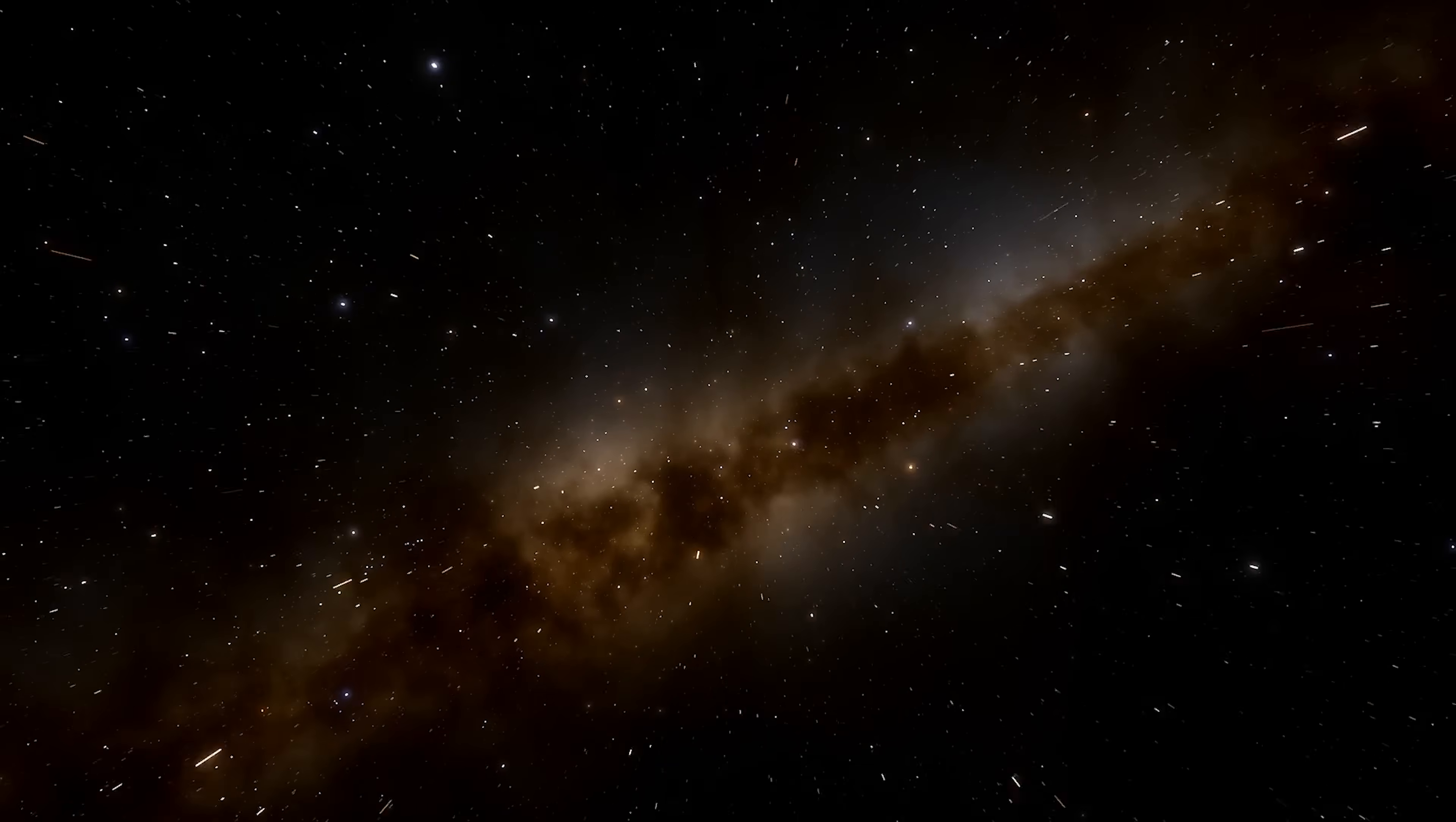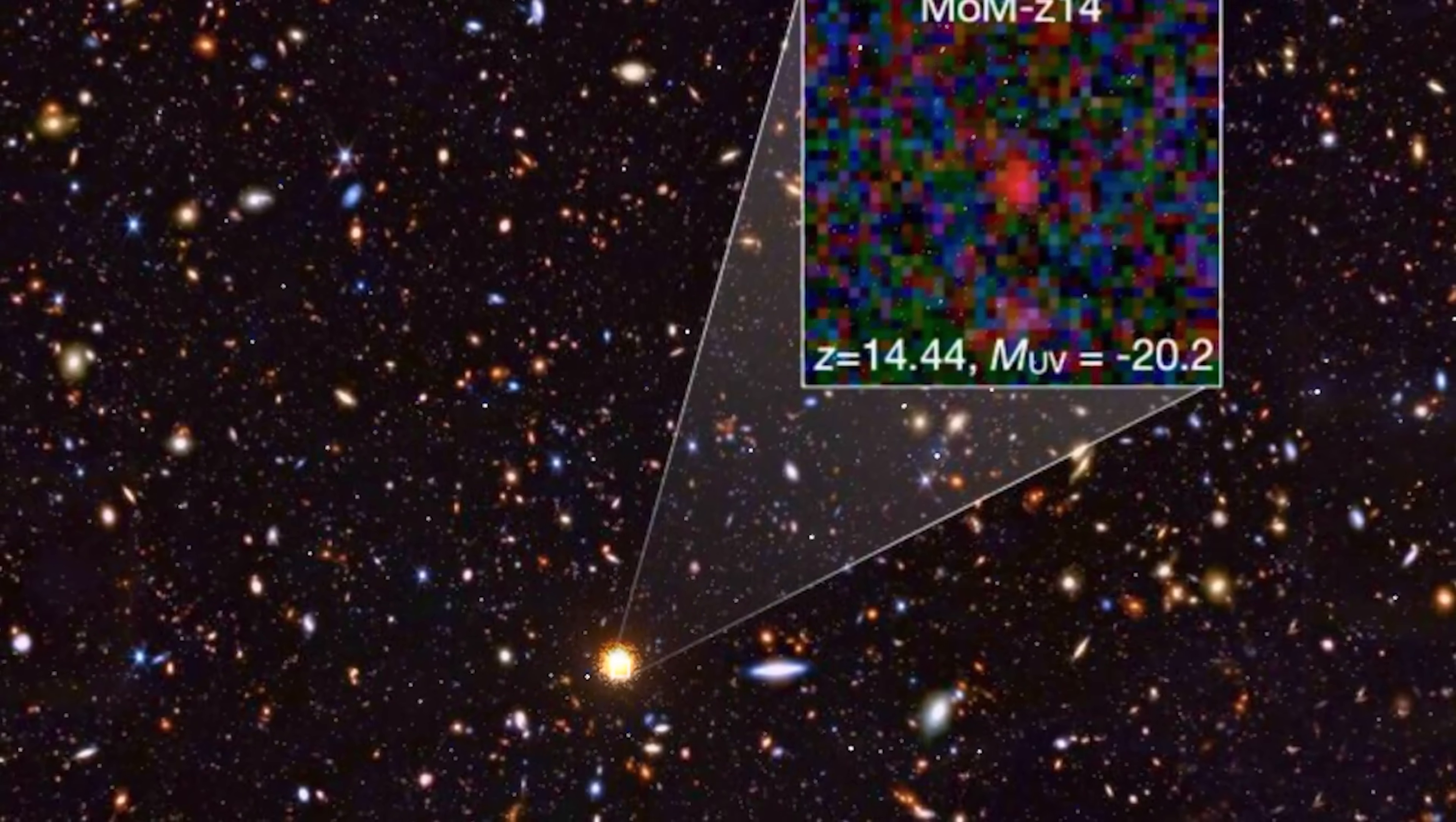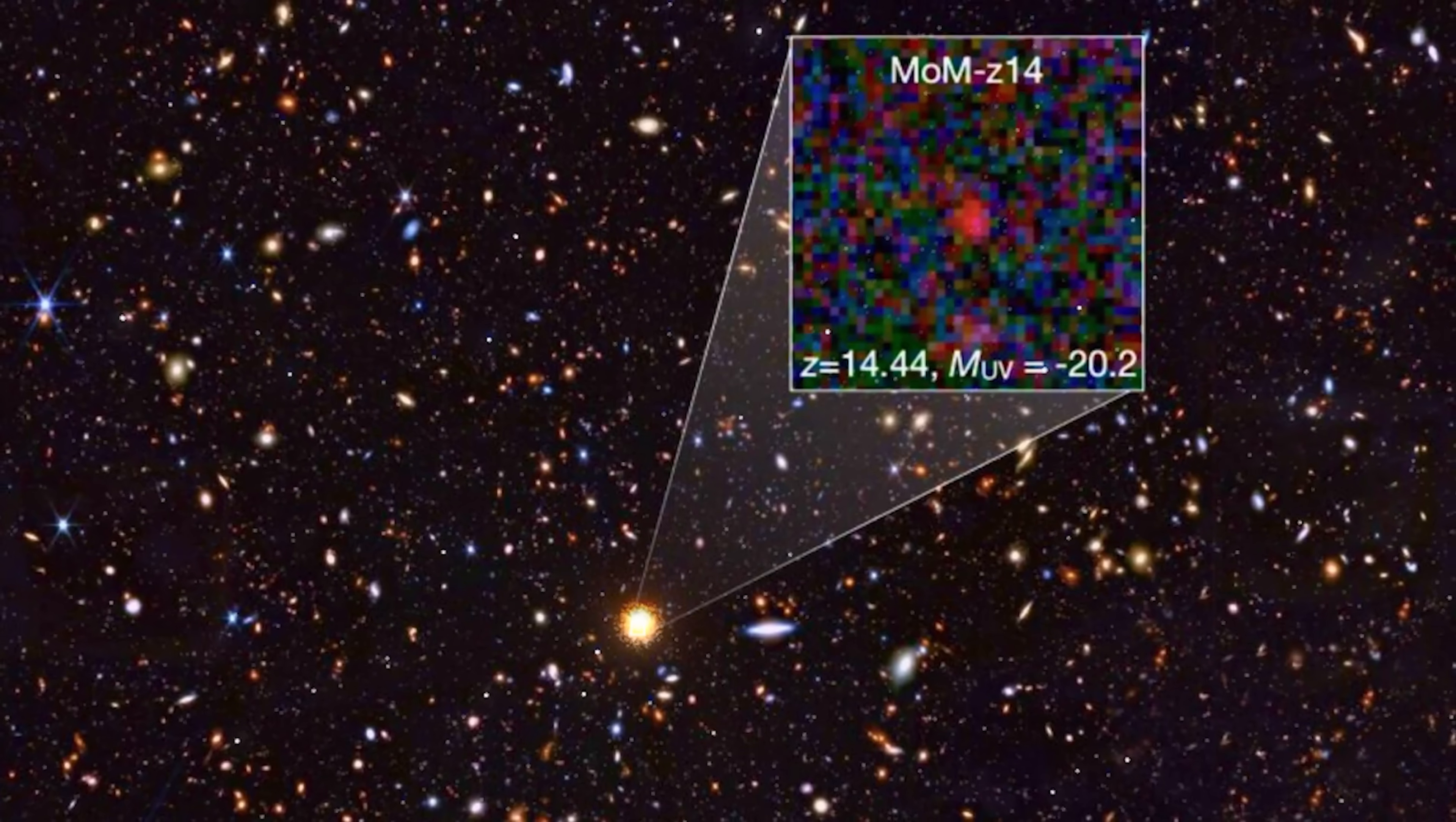This galaxy is tiny, only about 500 light years across. For comparison, the Milky Way stretches over 100,000 light years. Yet despite its size, MOMZ-14 is blazing with light. Galaxies this early in cosmic history were expected to be faint, small and sluggish. Instead, MOMZ-14 is a powerhouse, forming stars at an incredible rate. It's a furious stellar nursery, burning bright in the universe's opening chapters.